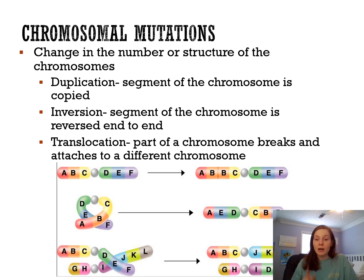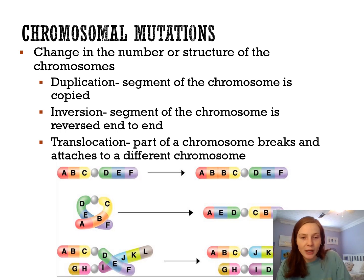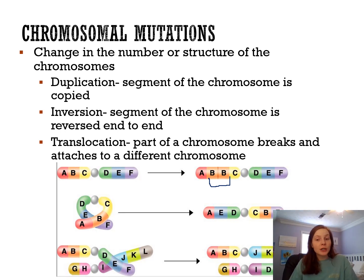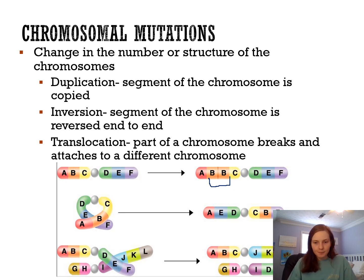There are three types of chromosomal mutations you need to identify from images or descriptions. The first is duplication — a segment of the chromosome is copied. In the example, segment B (representing 100–200 genes) is duplicated on the same chromosome. Having an extra copy of that many genes is not good.